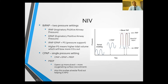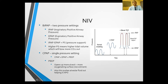BiPAP has two pressure levels: inspiratory positive airway pressure (IPAP) and expiratory positive airway pressure (EPAP). The difference between IPAP and EPAP is the pressure support, which helps achieve a bigger tidal volume. Higher tidal volume means higher carbon dioxide clearance — that's why BiPAP is extremely helpful in hypercapnic respiratory failure. If someone does not have elevated CO2, CPAP at a single pressure level is sufficient, similar to just having an EPAP.